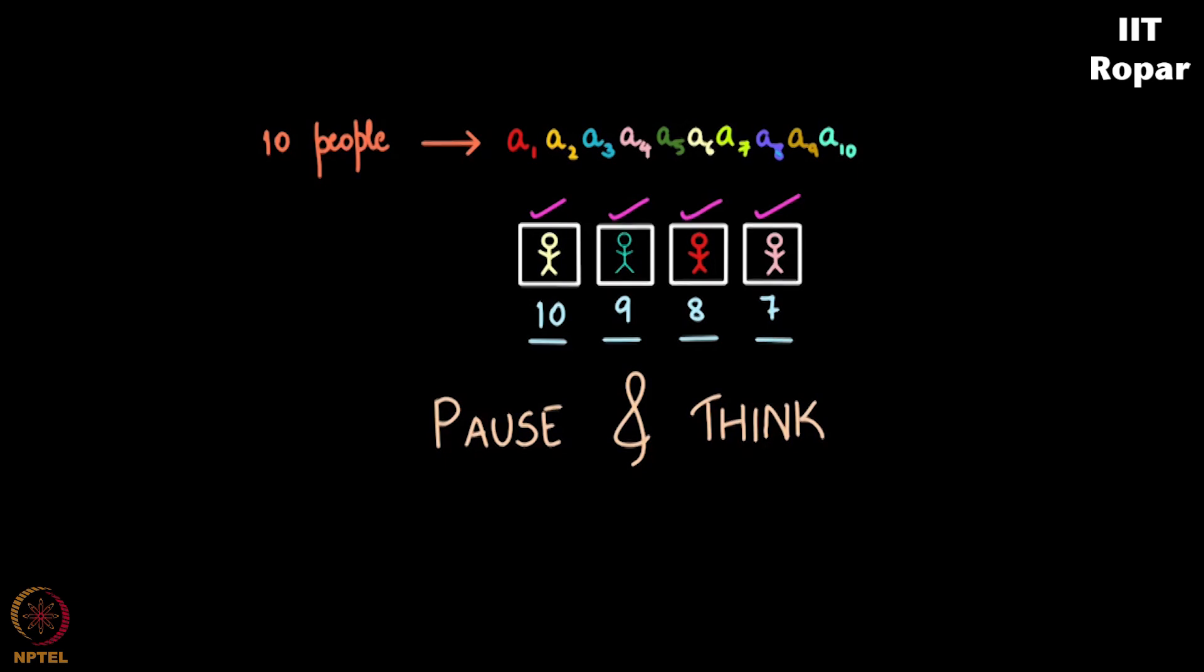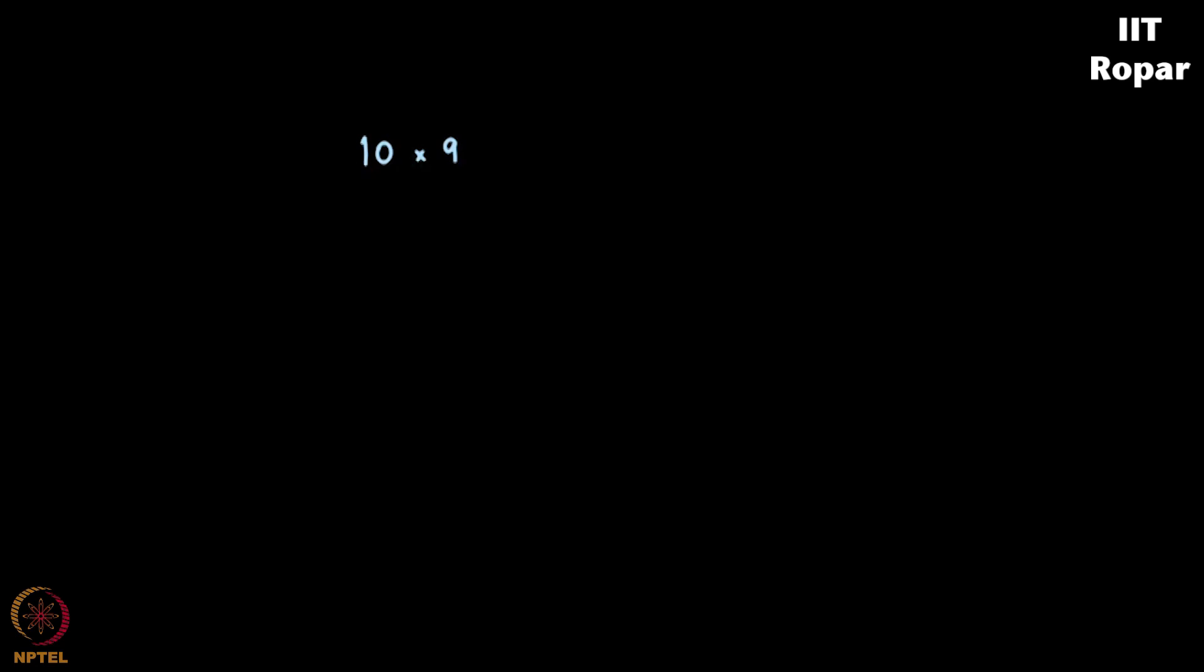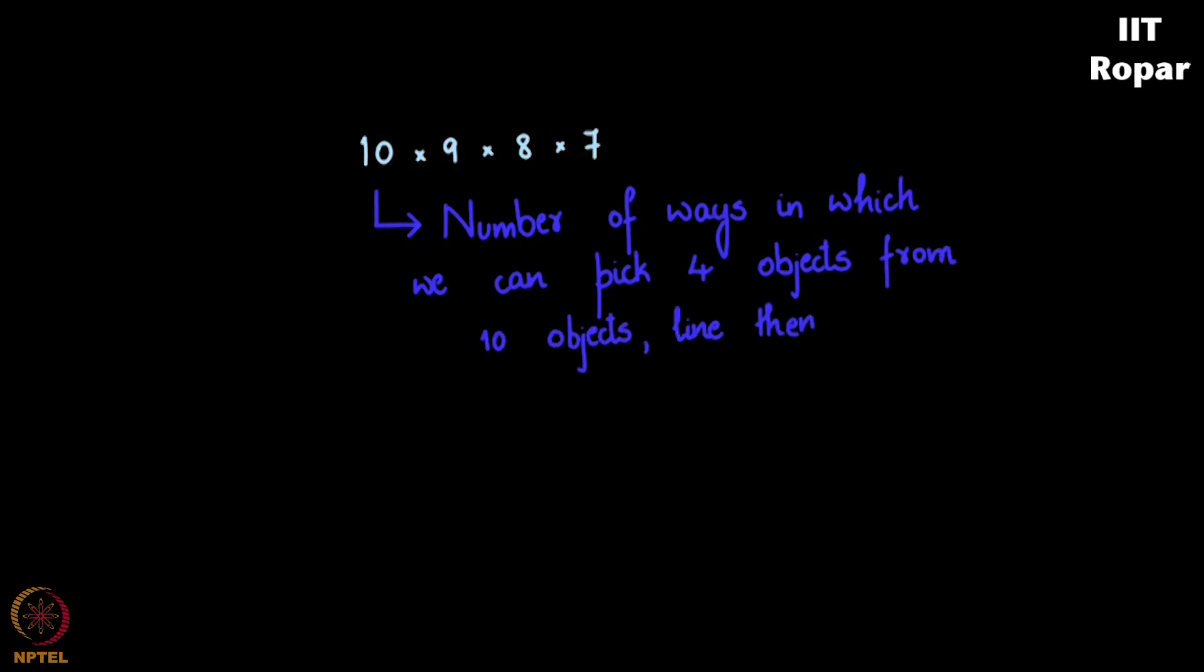Now we should take the product of these, which is 10 into 9 into 8 into 7 is the number of ways in which we can pick 4 objects from 10 objects, and line them up, and consider all possible orderings.